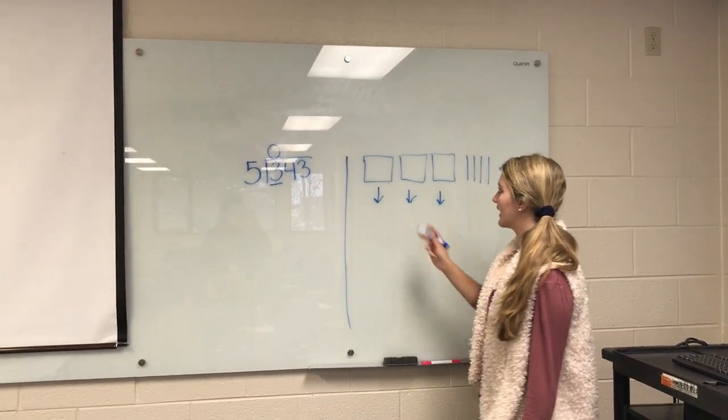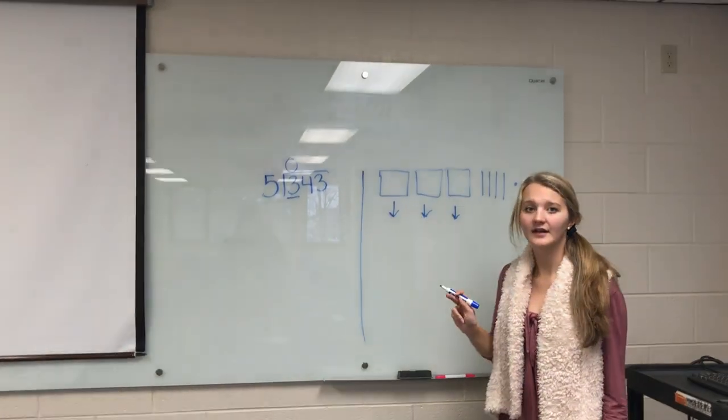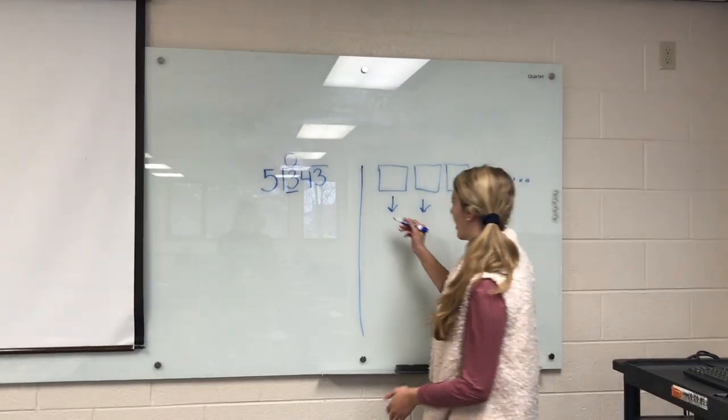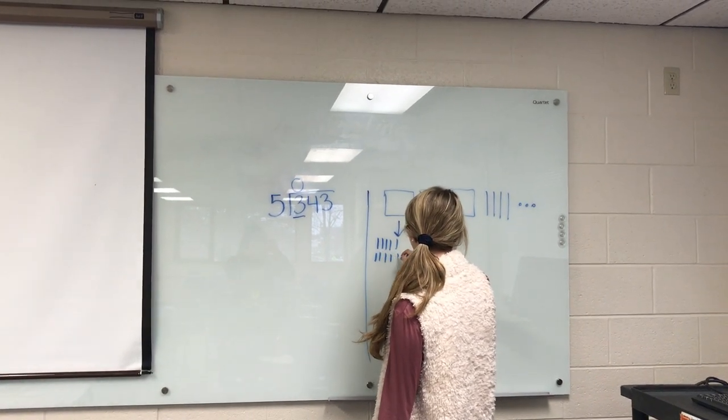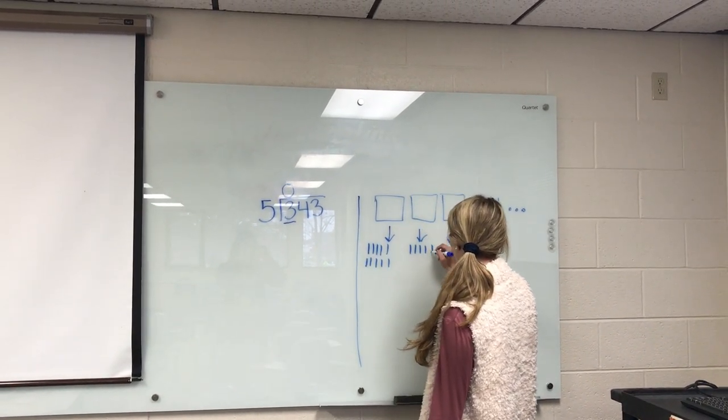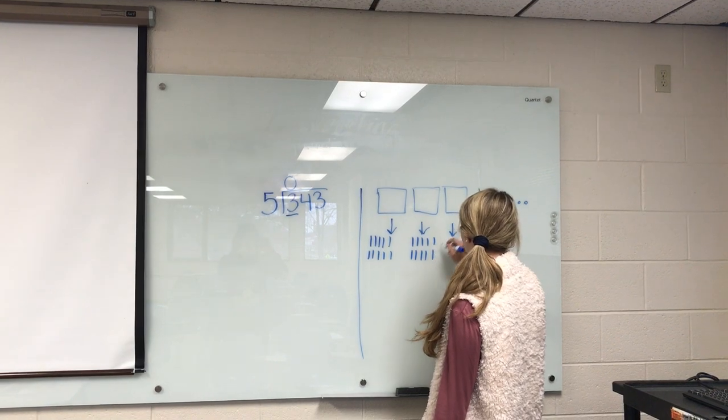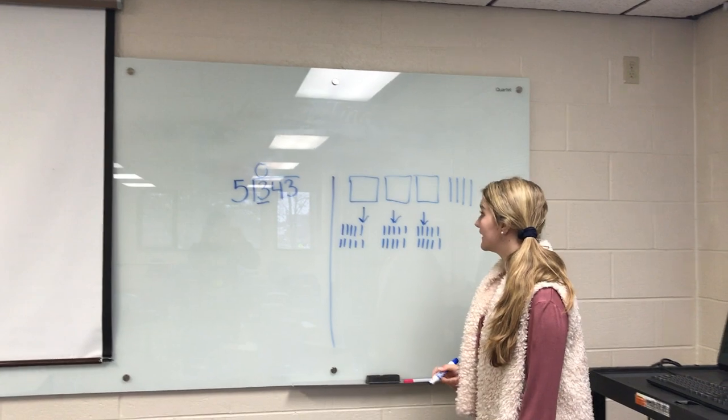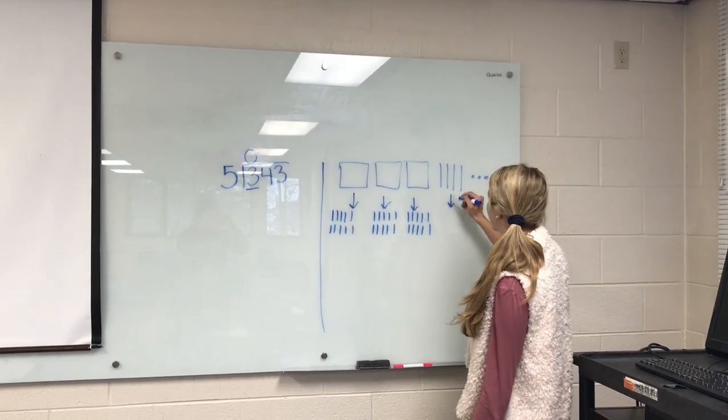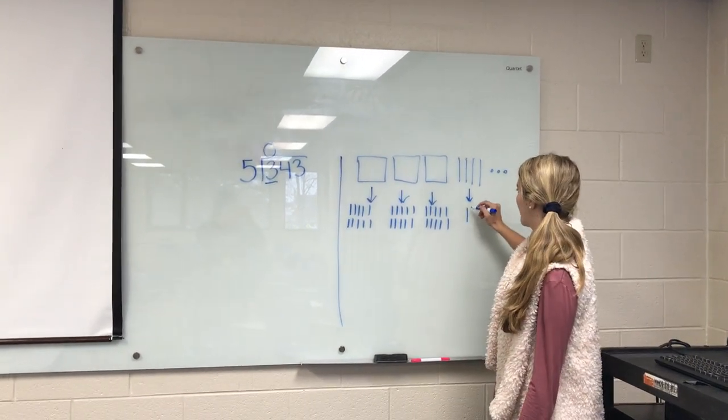This is what the regrouping would look like. Since each of these are made up of 10 longs, we will be drawing those. Now, we're going to bring these 4 longs down as well.